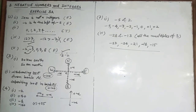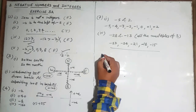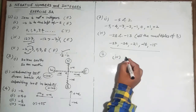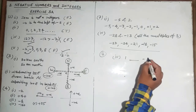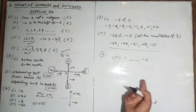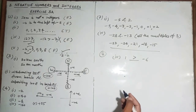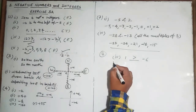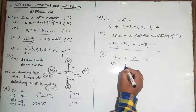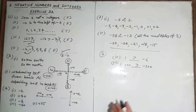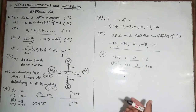Question number eight: compare each pair of integers to find which is greater. For one versus minus six: a positive number is always greater than a negative number, so one is greater. Similarly, 100 versus minus 100: 100 is greater. Question nine: arrange integers in increasing order — you can do that on your own.